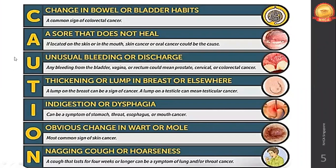A - a sore that does not heal; a wound in the skin or mucosal lining such as inside the mouth that never heals is a sign of oral cancer. U - unusual bleeding or discharge from bladder, vagina, or rectum, which can indicate prostate cancer in men, cervical cancer in women, or colorectal cancer in both. T - thickening or lump in the breast (suggesting breast cancer) or testicle (testicular cancer); a biopsy determines whether it is benign or malignant.